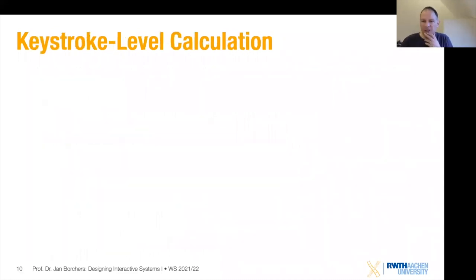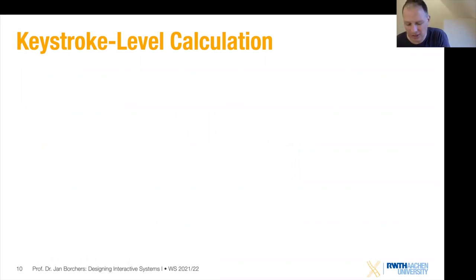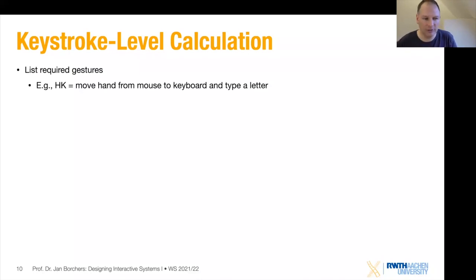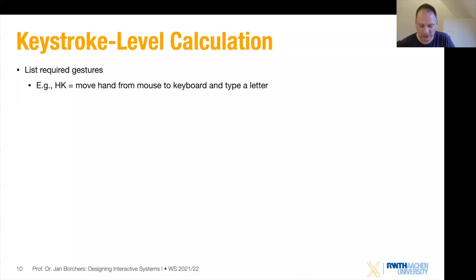Let's do an example. To calculate the time in the KLM model, you first list the required gestures. For example, if you're in a graphical application and need to open a new file by pressing a single key — say just the letter O — you need a homing gesture to move your hand from the mouse to the keyboard, and then type the letter. If it's truly a single key, you might use your left hand, keeping the right on the mouse — which is why certain keyboard combinations are very quick while others requiring both hands take much longer due to the homing time.